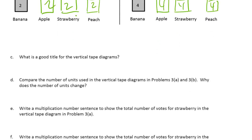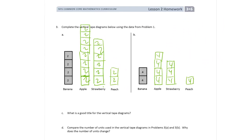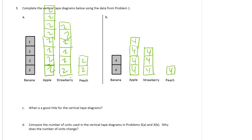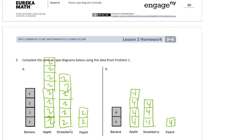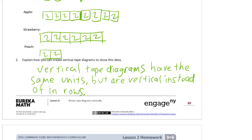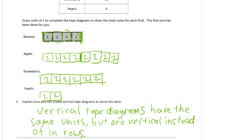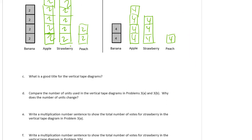What is a good title for the vertical tape diagrams? Well, just imagine it's a graph because it kind of is a column graph. Favorite Fruits of Third Graders. I'll take the title right from the chart.